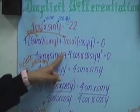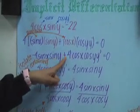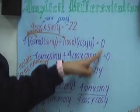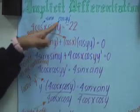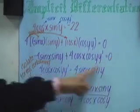I get negative 4sinx times siny plus 4cosxcosy y prime. Don't forget the y prime because if you have y, it's just y prime. And equals 0.